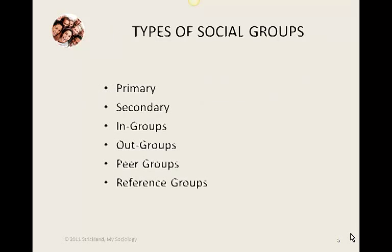There are different types of social groups: primary groups, secondary groups, in-groups, out-groups, peer groups, and reference groups.